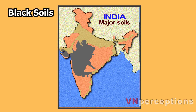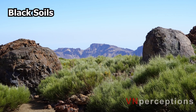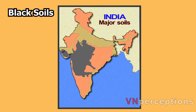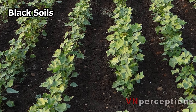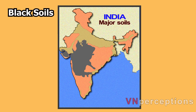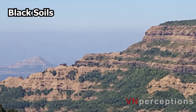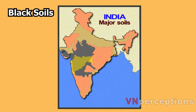Black soil is formed by the weathering of basalt rocks. It is a residual soil because it is formed at the place of its origin over the underlying rocks. It is dark in color and suitable for cotton cultivation, so it is also known as regar soil or black cotton soil. The regar soils are concentrated over the Deccan Lava tract, which includes parts of Maharashtra, Gujarat, Madhya Pradesh, Telangana, Andhra Pradesh and Karnataka.